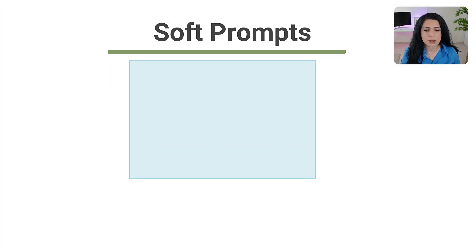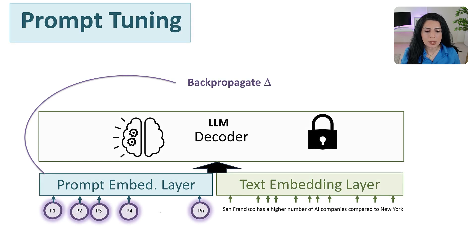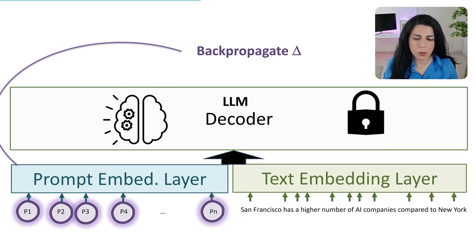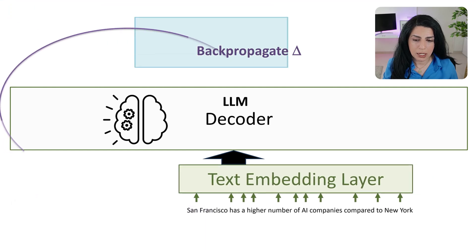In prompt tuning, we can go ahead and look at what's happening actually in that prompt embed layer, which will be added to our text embedding layer. If, for example, we have a sentence 'San Francisco has a higher number of AI companies compared to New York,' then next to that we will add some random numbers, which is our prompt embedding layer.